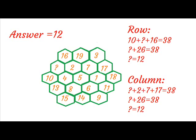As all the rows and columns on adding we get 38, we have to get 38 on the row and column which has question mark also. So on calculating we get question mark as 12.